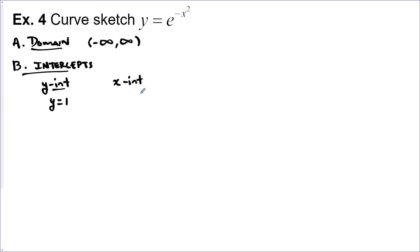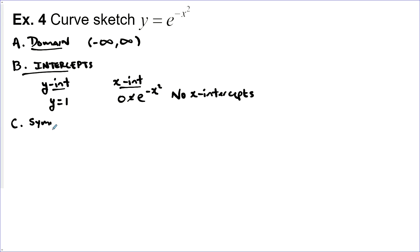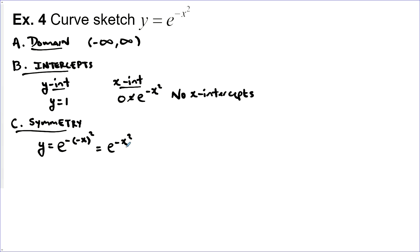For the x-intercepts, we set y equal to zero and try to solve, but we're not going to be able to — there's no value of x that will ever make this zero. So we conclude that there are no x-intercepts. Next, we check symmetry by substituting negative x: y equals e to the negative x squared, and the negative x gets squared, so it disappears and becomes the original equation again. So there is even symmetry to this function.